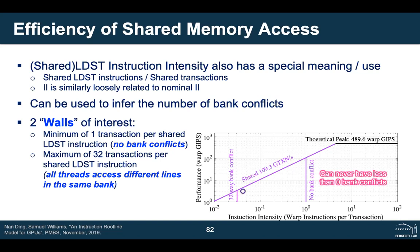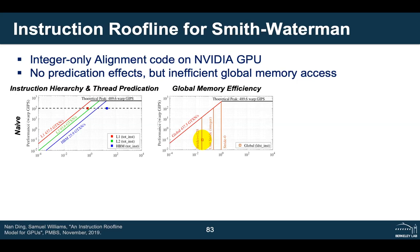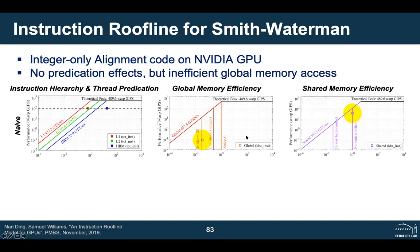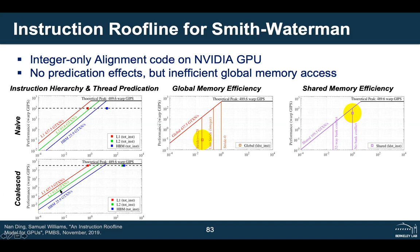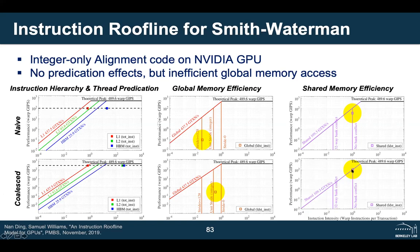For a Smith-Waterman example, the naive implementation shows moderate instruction throughput but poor global load/store efficiency — close to random access. The optimized implementation applies memory coalescing, transforming strided memory access to unit-stride access and getting near-peak instruction throughput. The number of bank conflicts didn't really change, but changing gather/scatter to unit-stride access was the key optimization. The instruction roofline tells us about bottlenecks in issue rate or memory, while memory walls tell us about the efficiency of memory access patterns.